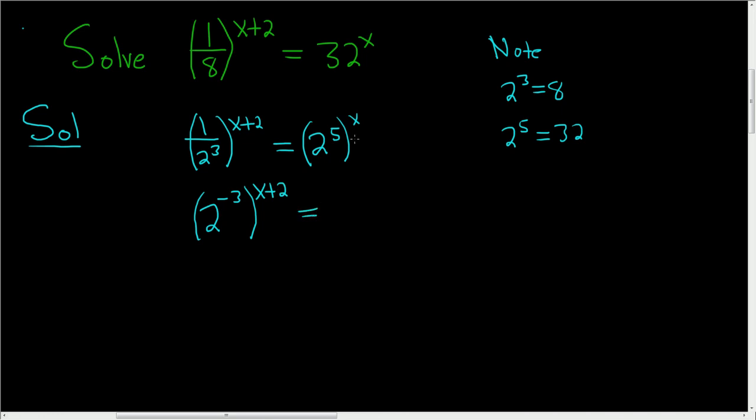And on the right-hand side, we can use properties of exponents to multiply the x and the 5, so we get 2 to the 5x.